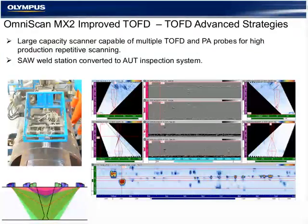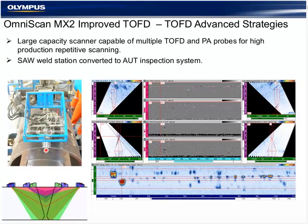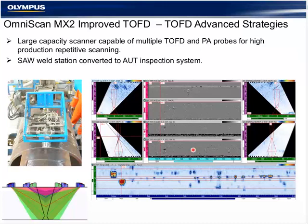In an example of an advanced TOFD strategy using TomoView for analysis, an SAW weld station has been converted to a phased array TOFD station using multiple zones for thicker components. The TomoView release compatible with the new PA2 modules will be released in March. Previous generation modules can be converted now using the TomoView display, where TOFD displays, phased array zones, sector scans, and merged C-scans can be customized and rearranged as necessary.